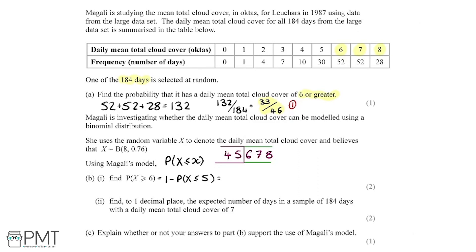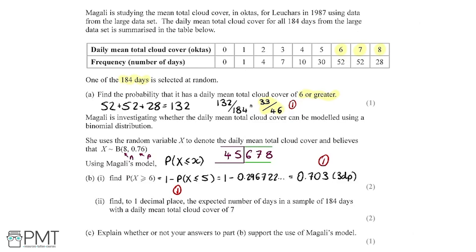Going into the binomial CD menu in the calculator, we input the upper value as 5, with n equal to 8 and p equal to 0.76. This gives us 1 minus 0.296722..., which evaluates to 0.703 to three decimal places. We get one mark for writing P(X ≥ 6) as 1 minus P(X ≤ 5), and a second mark for the final probability of 0.703.